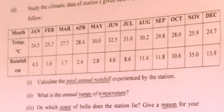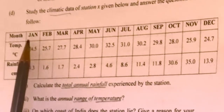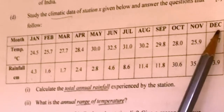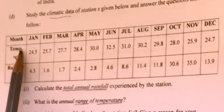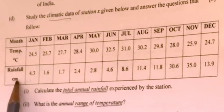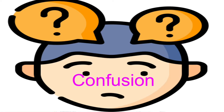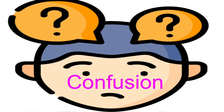In the chapter on climate, you will get questions on climatic data. In this question, you will have months from January, February, March till December, along with mean temperature in degree Celsius and rainfall in centimeter. This type of table you will get. There is one big confusion among students — let me clear that confusion.